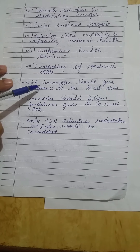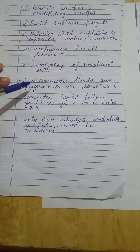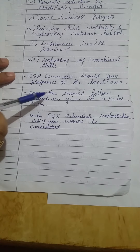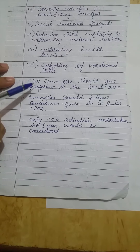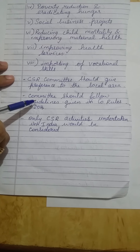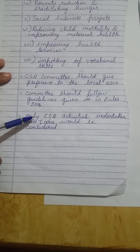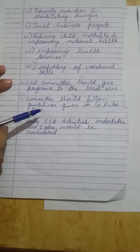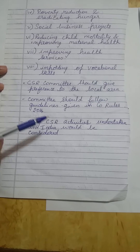The next function of the CSR committee is that it should give preference to the local area where they are operating in their CSR activities. Supposing the company is operating in Delhi, they should focus on CSR activities first in Delhi and then in other states. The committee should follow guidelines given in the Companies Rules of 2014, which contains a list of what CSR activities have to be undertaken and how the procedure has to be followed. Only CSR activities undertaken in India would be considered eligible for claiming tax deduction rebates. These are some of the functions of the corporate social responsibility committee set up under Section 135.